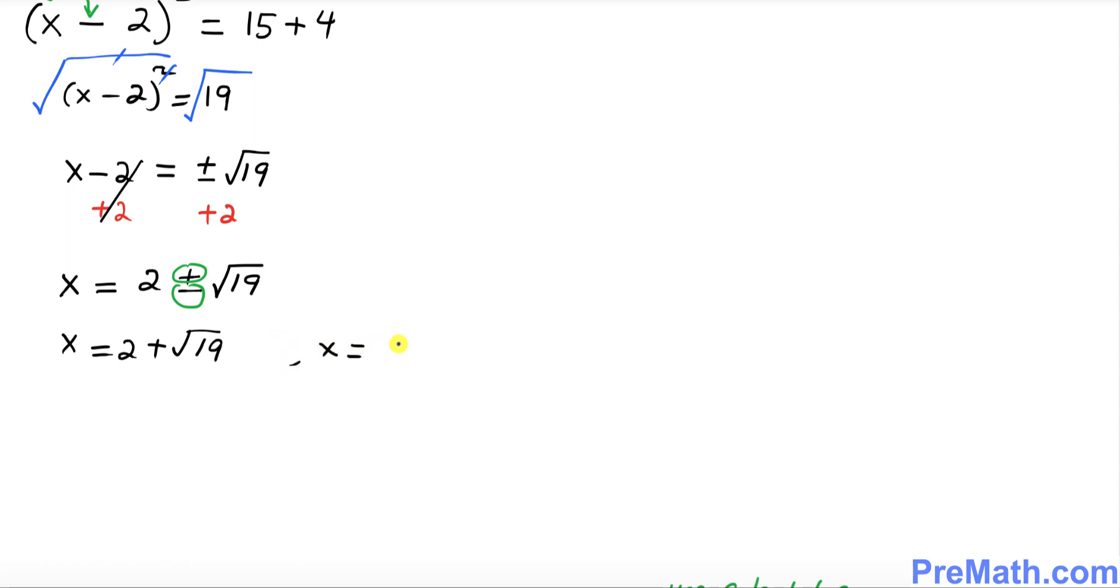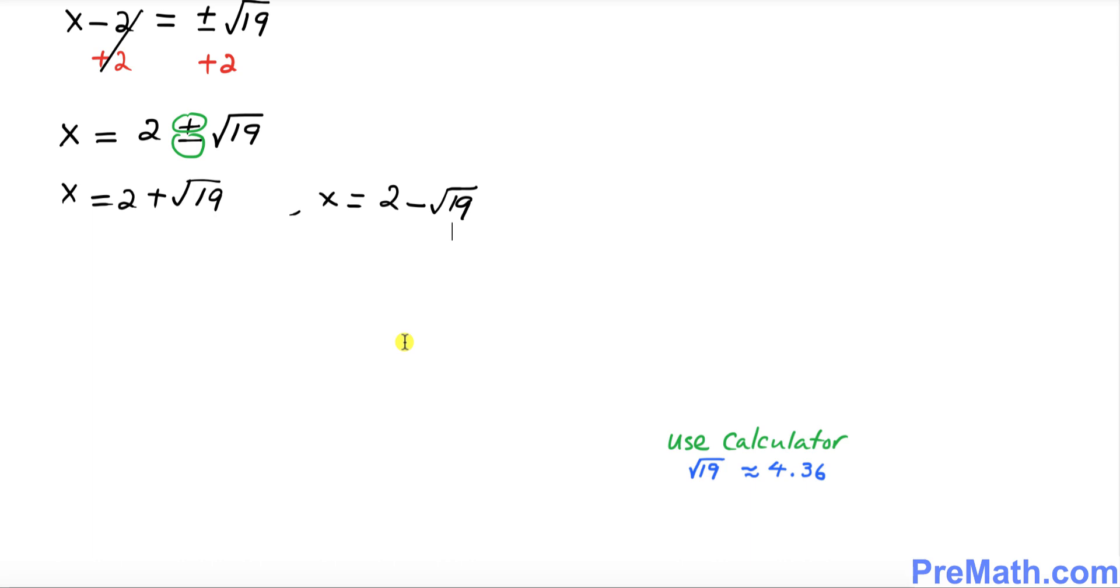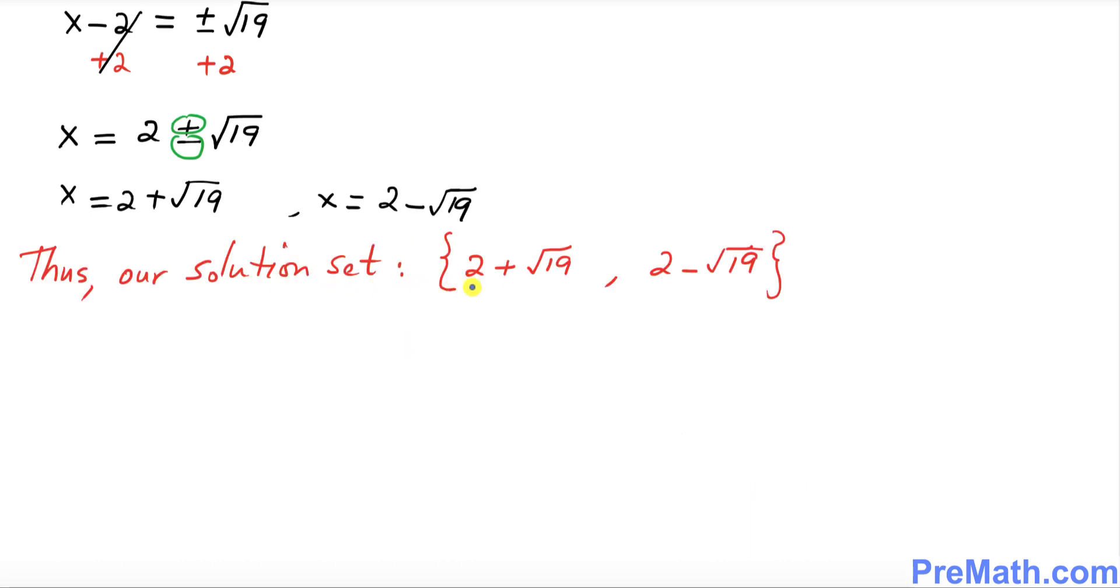And the other one is going to be x = 2 - √19. Thus our solution set turns out to be {2 + √19, 2 - √19}.